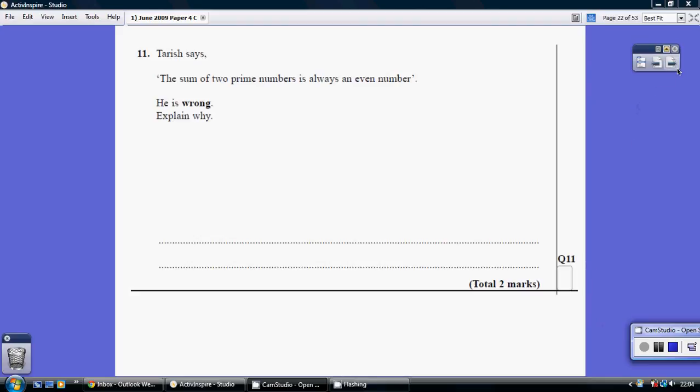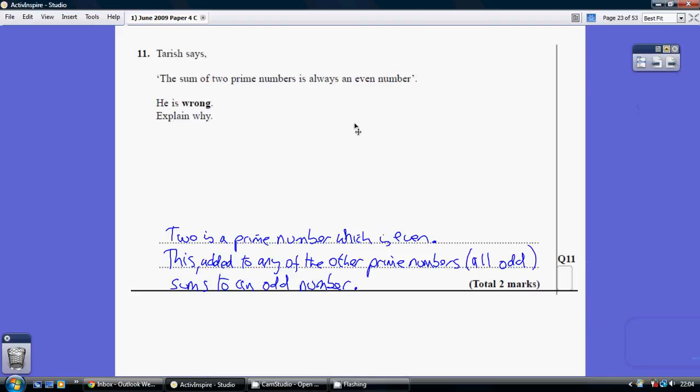Question 11. Now the statement is that the sum of two prime numbers is always an even number. So he is wrong, explain why.